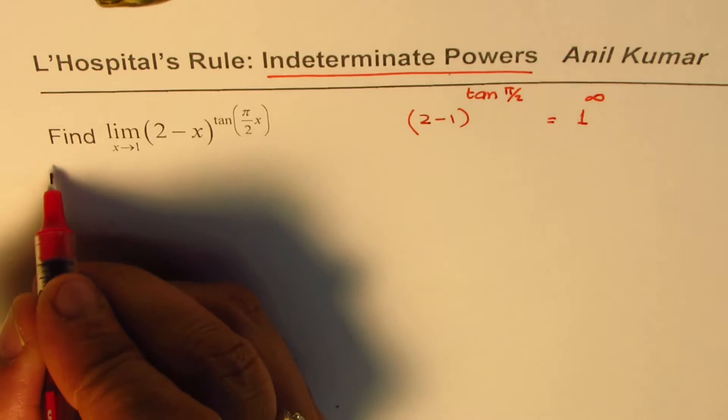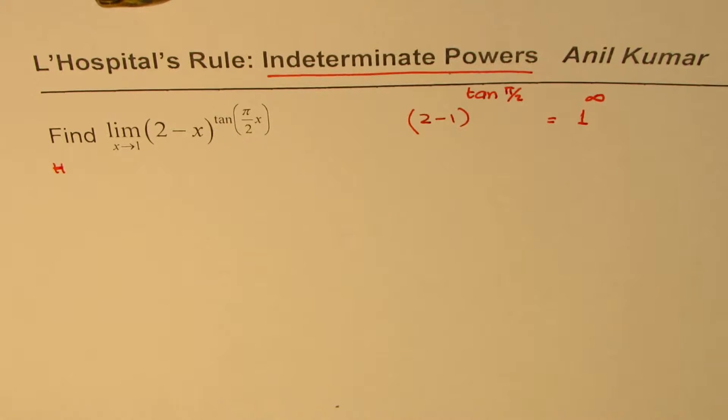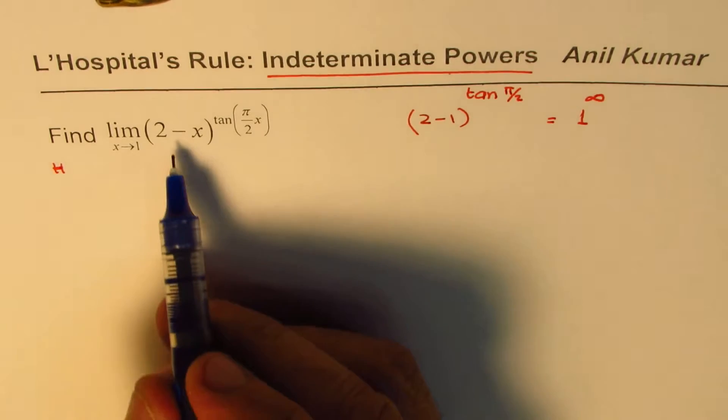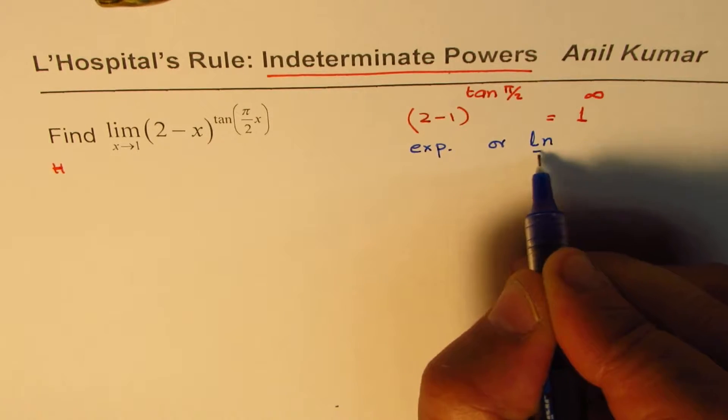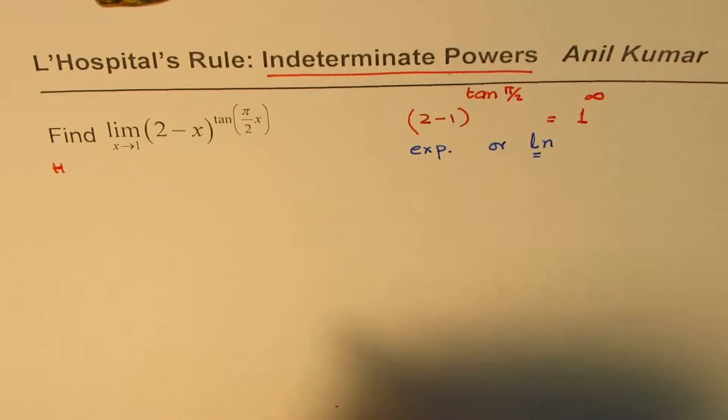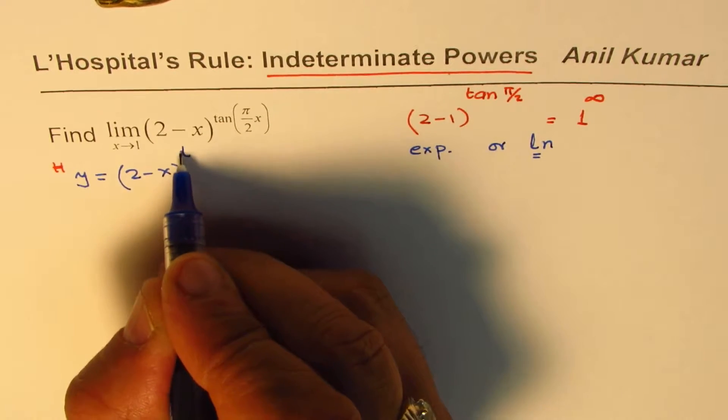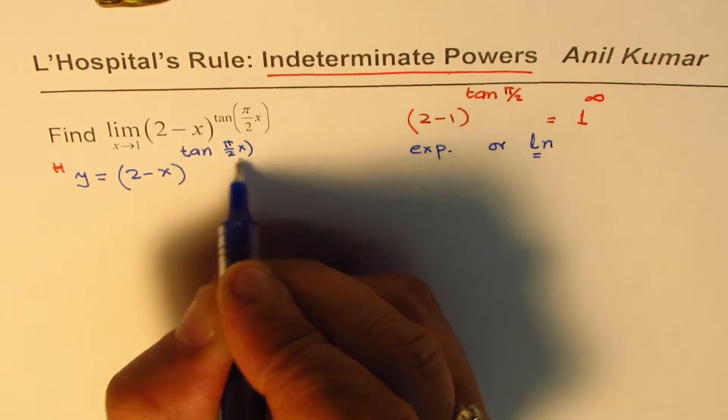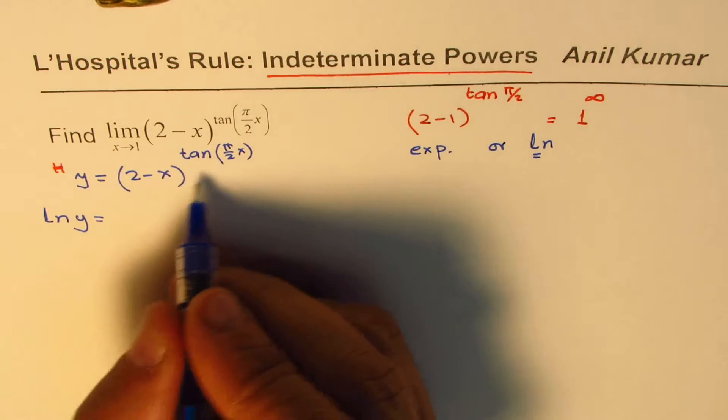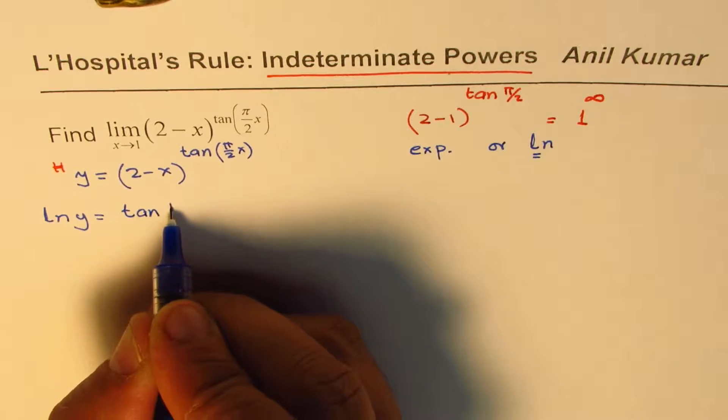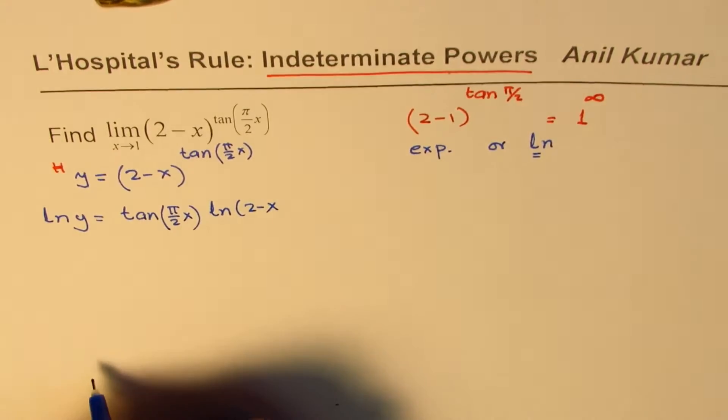So we can apply L'Hôpital's rule. You cannot directly apply the rule, so what we will do here is to apply this rule. We need to write this as an exponential function or logarithmic function. So we prefer to write this as natural log. The steps involved are: redefine the function. Let y equal (2-x) to the power of tan(πx/2). Take natural log on both sides, so we get ln(y) equals tan(πx/2) times ln(2-x).